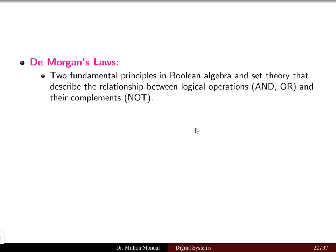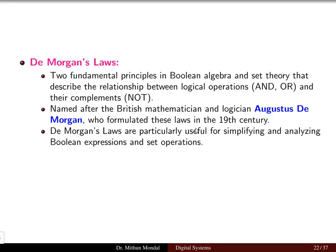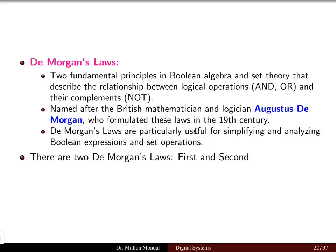De Morgan's laws are two fundamental principles in Boolean algebra and set theory that describe the relationship between the logical operations AND, OR, and their complement NOT. They are named after the British mathematician and logician Augustus De Morgan, who formulated these laws in the 19th century. These laws are particularly useful when simplifying and analyzing Boolean expressions and set operations.